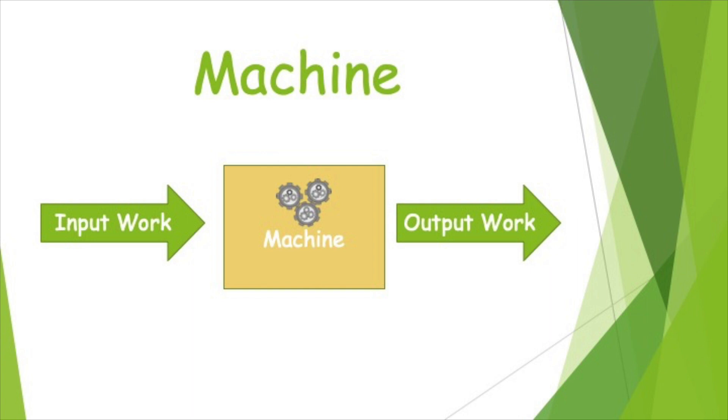So in this picture, I have a fictional machine there. It's just a square with some gears in it. And we have work input going into the machine, and then we have work output coming out of the machine. And what that means is that you're going to do some amount of work on the machine. So let's say, for example,